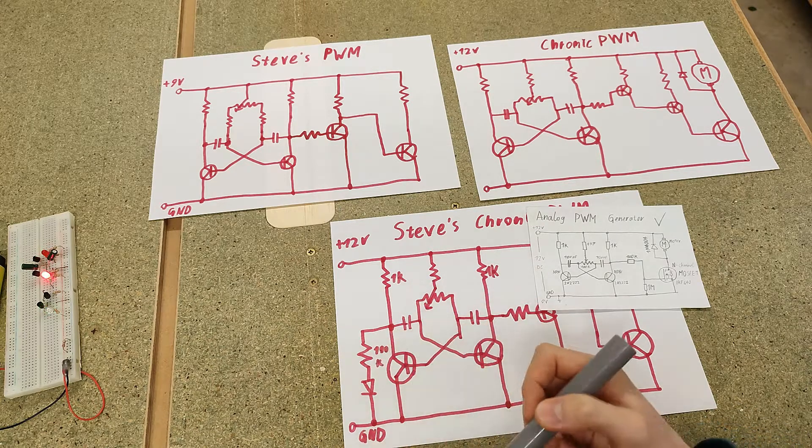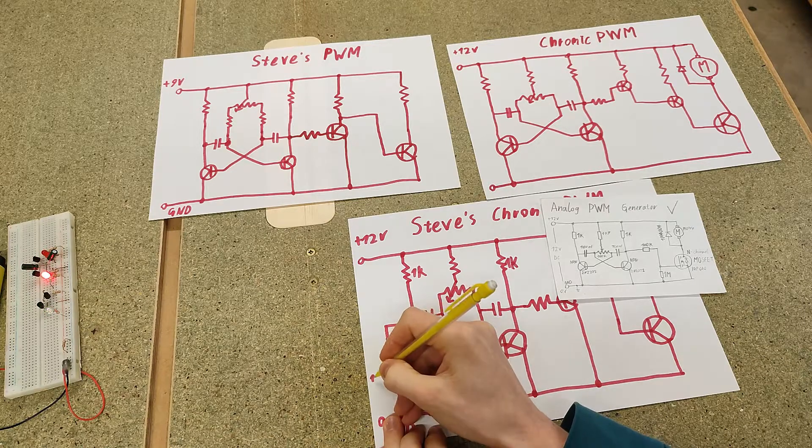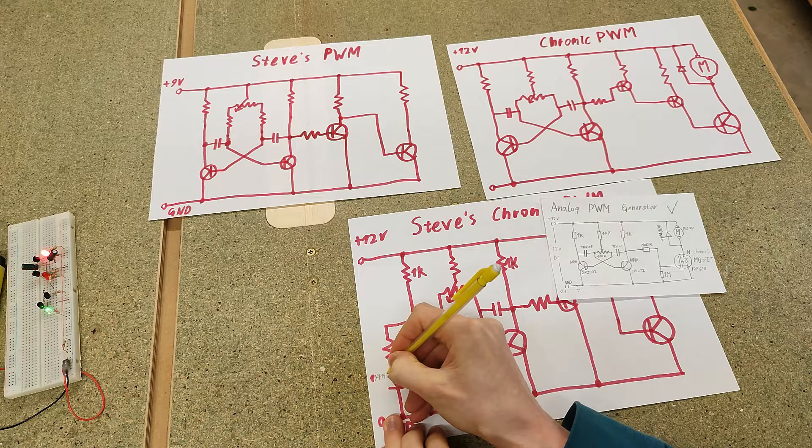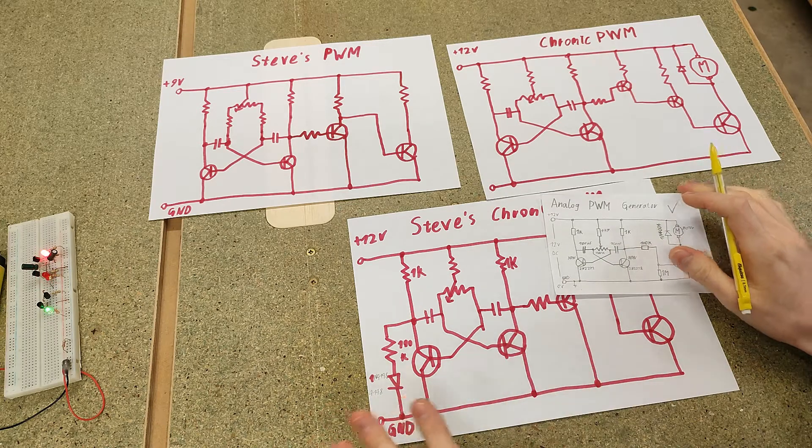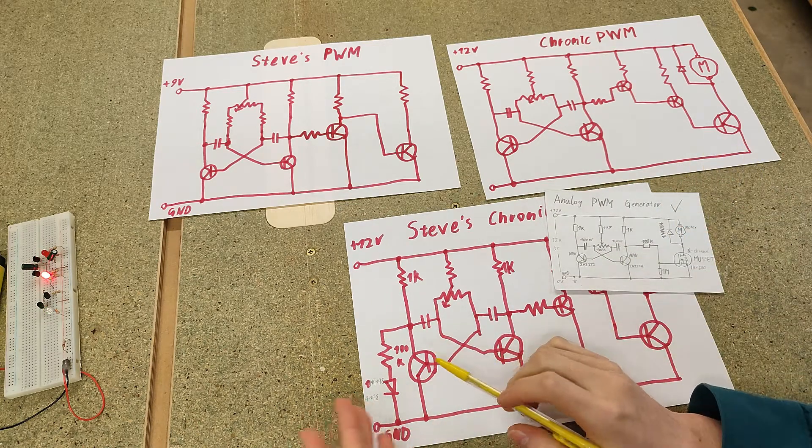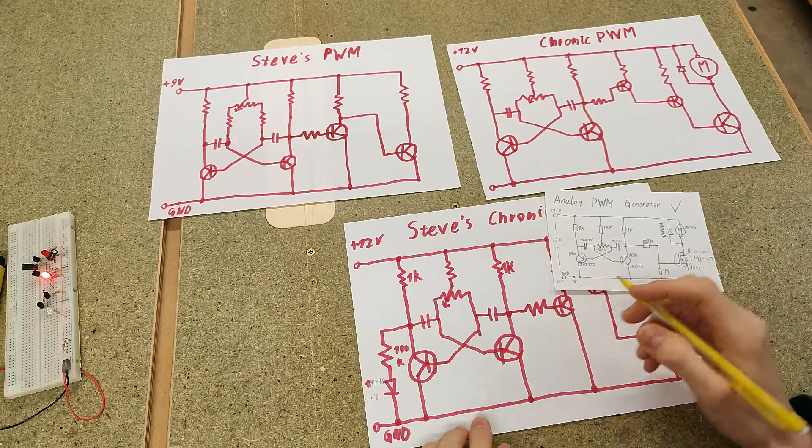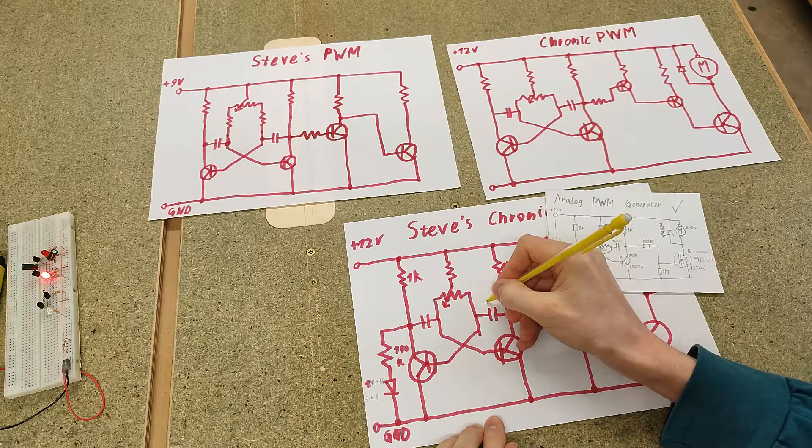Then we have a diode. So here I'm going to put a 1N4148, just the lowest current diode you can find. Anything will work. It's just to get the 0.7 volts threshold voltage. This is going to be 100nF. Steve also used 100nF, so we're going to stick with 100nF.